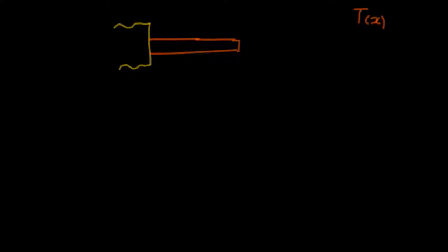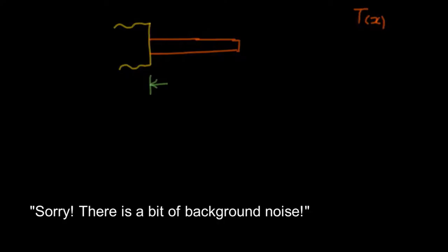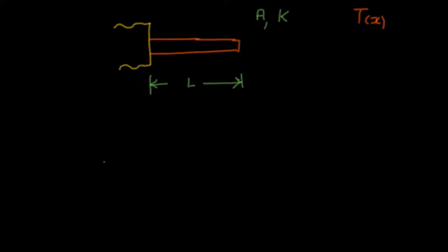Let me define the geometric properties of this physical scenario, represented in green. This pin fin has a length of magnitude L and a cross-sectional area of magnitude A. The cross-sectional area is usually circular. The pin fin is made of a material with thermal conductivity K — a material property that varies from one material to another, with units of watts per meter squared per degree Celsius.